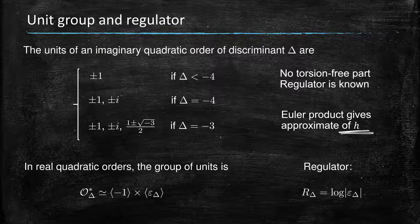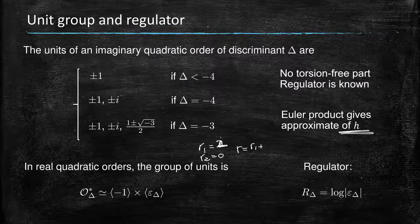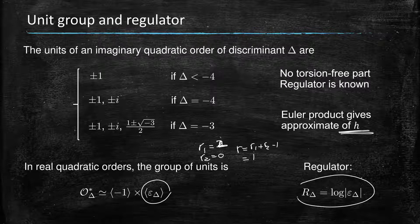For the record, in the real quadratic order we have r1 equals 2 real embeddings and r2 equals 0, so the rank of the unit group is r1 plus r2 minus 1, which equals 1. The torsion-free part has rank one, meaning there is a fundamental unit that generates it. By definition, the regulator is just the log of that fundamental unit, since it's the determinant of a 1×1 matrix. So the regulator is easy to calculate once you find the fundamental unit.